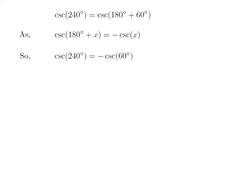Let us apply the above identity for cosecant of 240 degrees. Here x is 60 degrees, so cosecant of 240 degrees is equal to minus cosecant of 60 degrees.